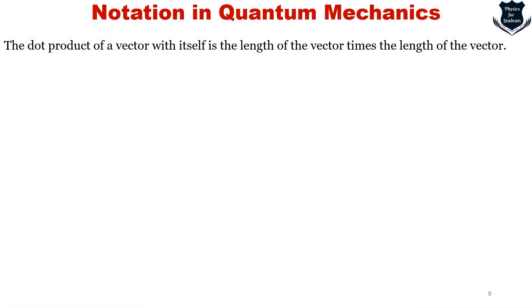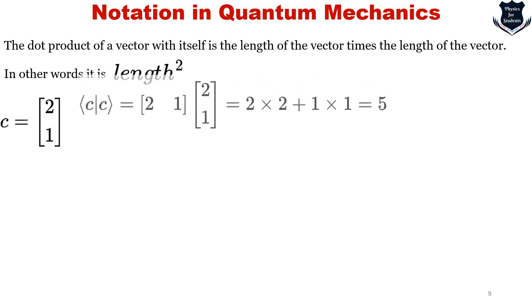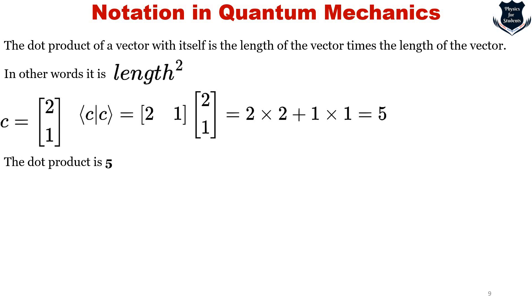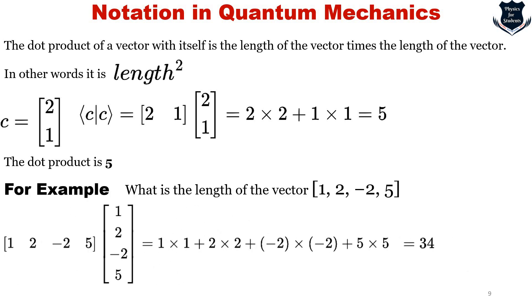The dot product of a vector with itself is the length of the vector - that means length times length, which is length squared. We can see an example where the dot product gives a result of five. We can take the length of the vector using Pythagoras to get the square root of 34.